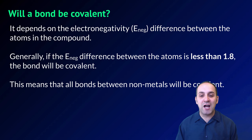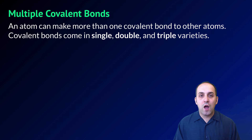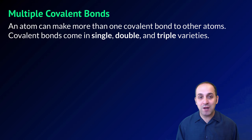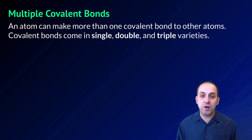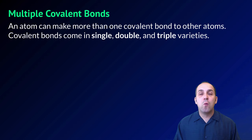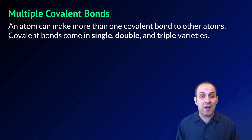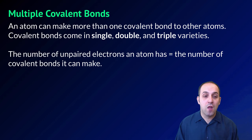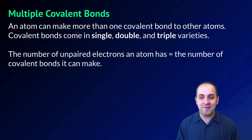Another interesting thing about covalent bonds is that an atom can make more than one covalent bond to other atoms. Covalent bonds can also come in single, double, and triple varieties, where you can have one atom sharing one, two, or three electrons simultaneously with another atom. The number of unpaired electrons that an atom has is equal to the number of covalent bonds that it can make.